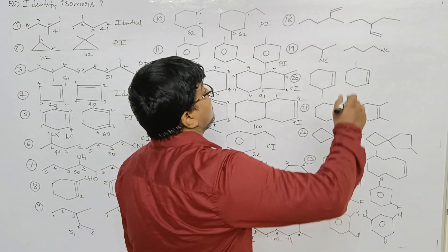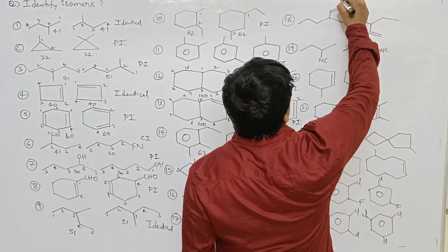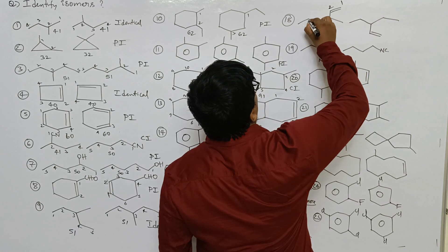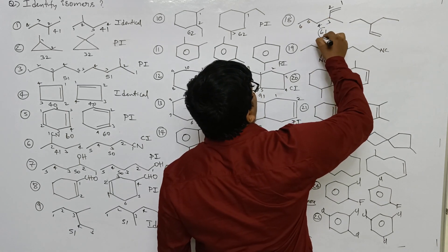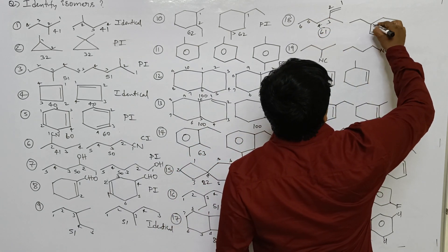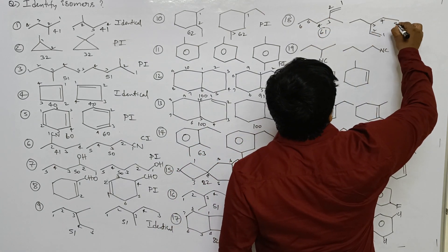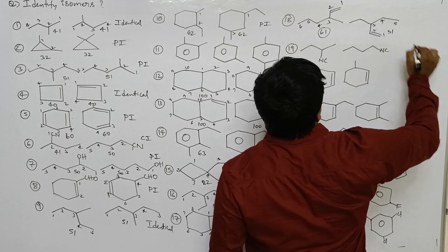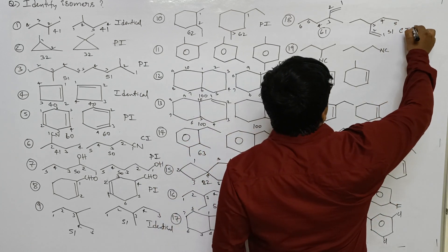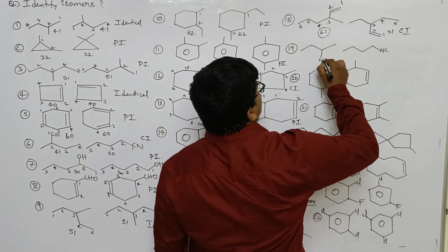Next one: 1 2 3 4 5 6 — isomeric number 61. Other: 1 2 3 4 5 — isomeric number 51. These two are chain isomers.